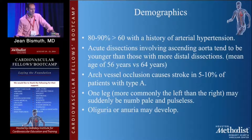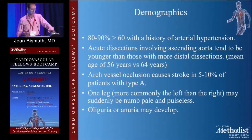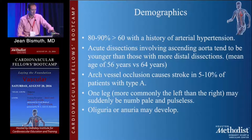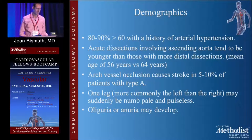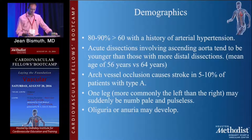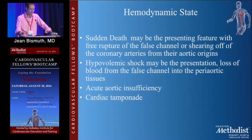Demographics: 80 to 90 percent are more than 60 years of age and have arterial hypertension. Acute dissections involving the ascending tend to be younger — about an eight-year difference. Arch vessel occlusion causes stroke in 5 to 10 percent of patients with Type A. One leg is more commonly affected than the other — the left — which is usually the false lumen, and it becomes suddenly numb, pale, and pulseless. You can often fix the Type A portion and that will resolve it. You also have renal insults. Sudden death can be the presenting feature with free rupture of the false channel, though most of those patients won't make it to the hospital.